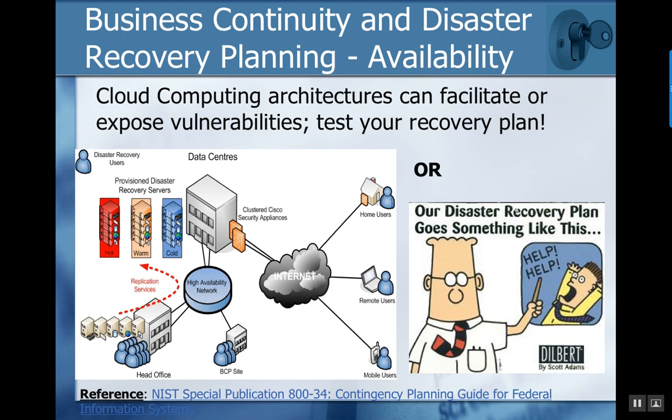Business continuity — NIST has a specific document, 834, dealing with disaster recovery and planning. This is really a process, a combination of business plan plus architecture design — how you define what you have and what you can restore, and how quickly you can restore it.